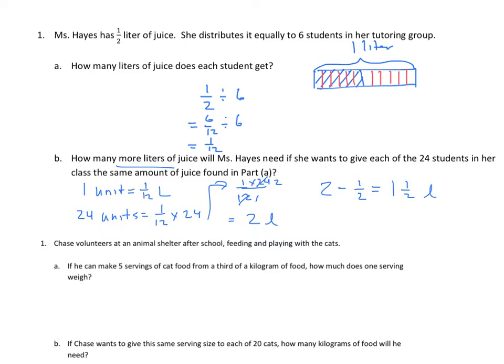I just want to relate this with the problem. We have Chase as a volunteer at a shelter, animal shelter, feeding and playing with cats. If he can make five servings of food from a third of a kilogram of food, how much does one serving weigh? Well, in this case, instead of our whole being one half, our whole is one third. Instead of breaking it down into six servings, we're going to break it down into five servings. So you can see that part A in the homework is very similar to part A in our practice set.